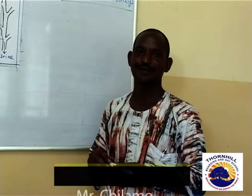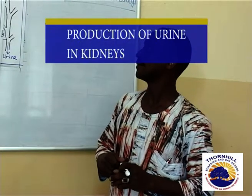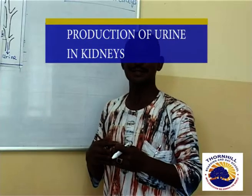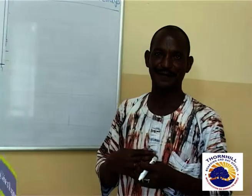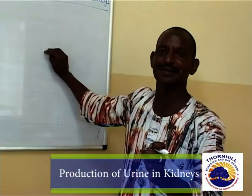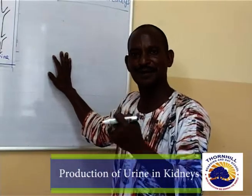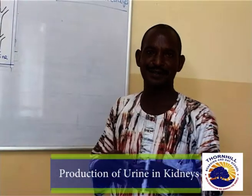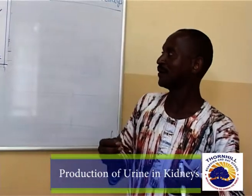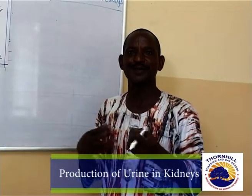I am Mr. Chlamo Humphrey, a teacher of biology, and in this lesson today we look at how the kidneys produce urine. Kidneys are organs of excretion and their major waste product they excrete or release from the body of the human person or a larger mammal is urine. I am going to look at which structures are involved in this urine production.